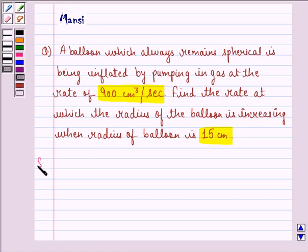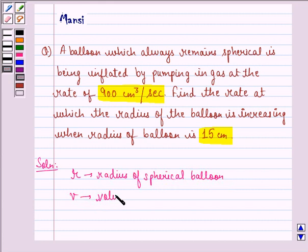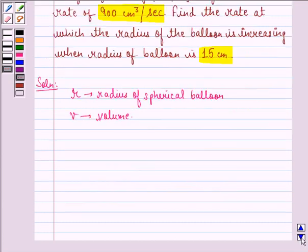Let's start with the solution. Let R be the radius of the spherical balloon and V be its volume. The volume of a sphere is given by V = (4/3)πR³.